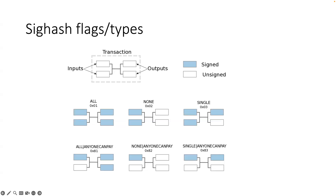Specifically, when you see ALL, NONE, SINGLE etc., in this diagram the left side shows the inputs that are meant to be included in the hash, and the right side shows the outputs that are meant to be included in the hash. The colored means signed and white means it does not need to be included. Exactly, yes.